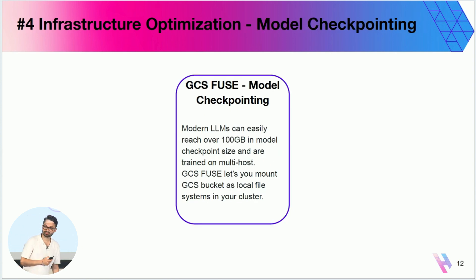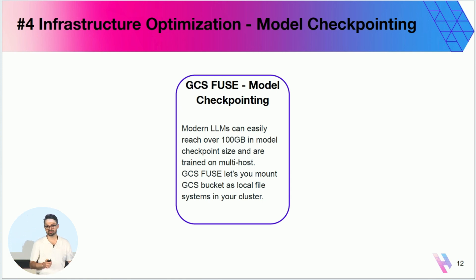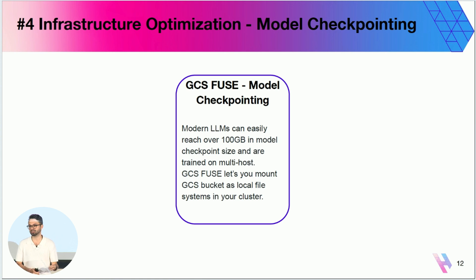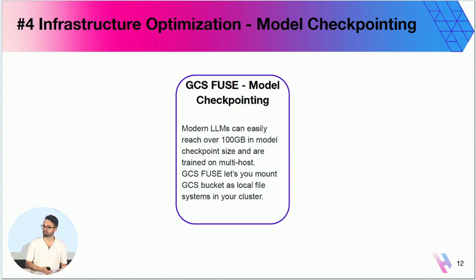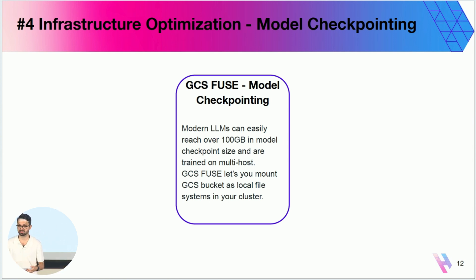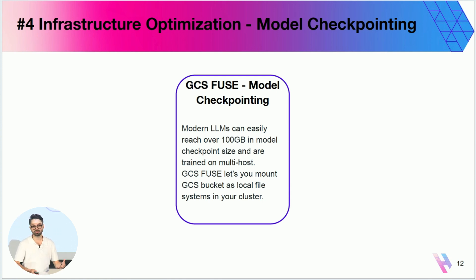The fourth infrastructure optimization is model checkpointing. When training modern LLMs there are a lot of optimizer states and data being stored, and as you save different checkpoints the data can range from hundreds of gigabytes to nearly a terabyte. Saving such massive data to disk can be very time-consuming, and you want to minimize that. A very straightforward option is to spin up an NFS server — that's actually how we started at Spotify. If you have a Kubernetes cluster you can spin up an NFS within that same cluster and you should be able to do it.